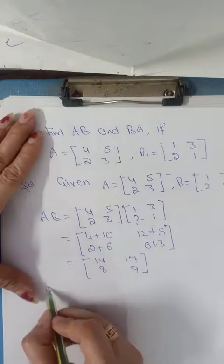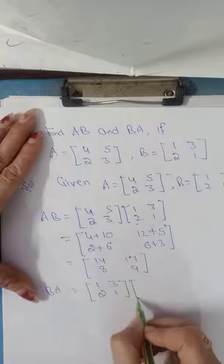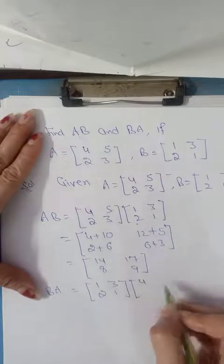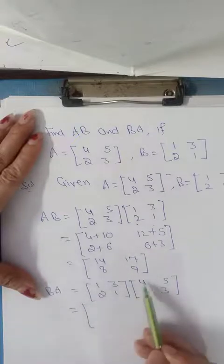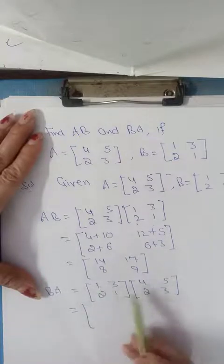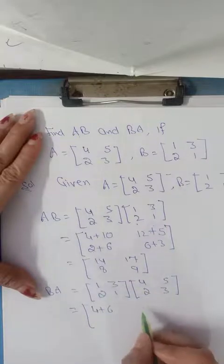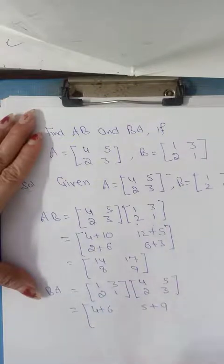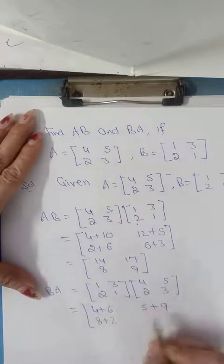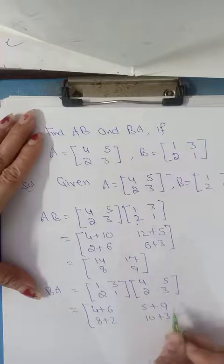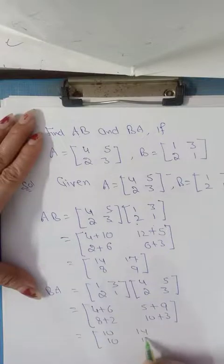Now we have to calculate BA. So first B matrix: 1, 3, 2, 1, multiplied by A: 4, 5, 2, 3. The multiplication method is the same. First row, first column: 4 plus 6 equals 10. Next, first row, second column: 5 plus 9 equals 14. Second row, first column: 8 plus 2 equals 10. Then we have 4 plus 3 equals 13. So it is 10, 14, 10, and 13.